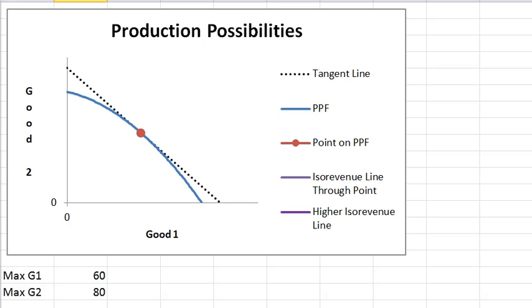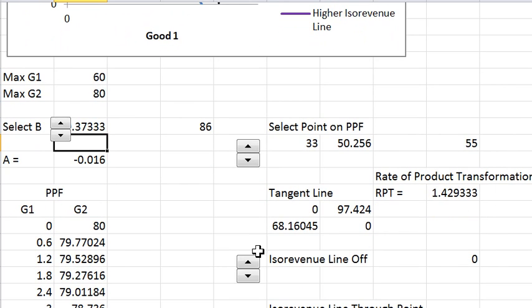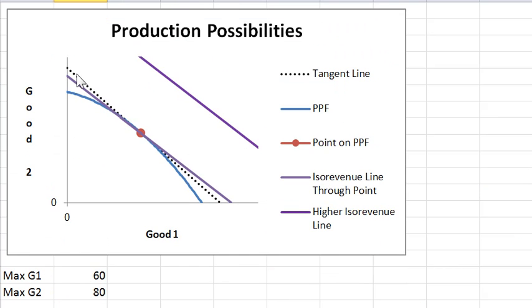There is a further control if you scroll down. You can turn on the revenue lines. When we're looking at the technology, this is off. Now I'm going to turn this on and we'll go back to the picture. Now you see an ISO revenue line in purple through the point and a higher ISO revenue line.